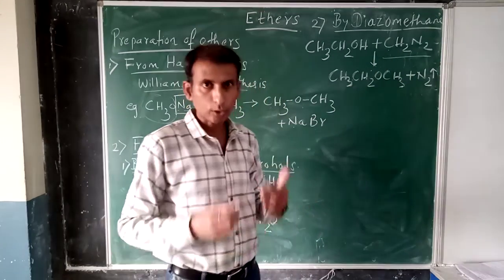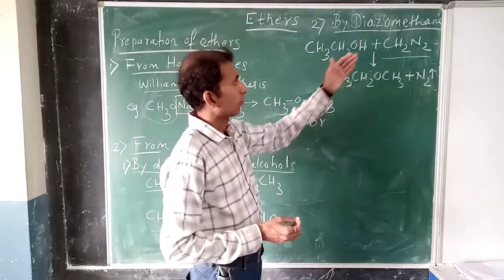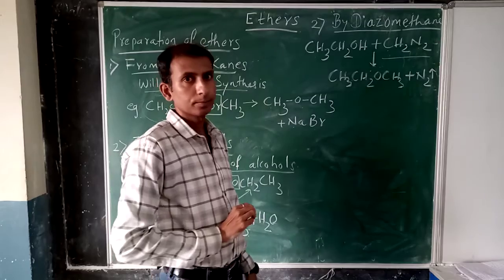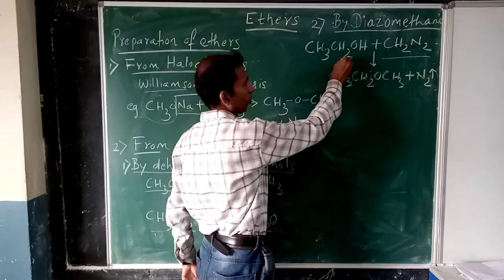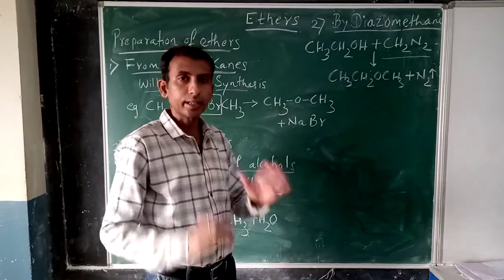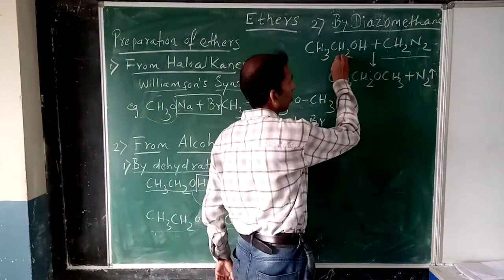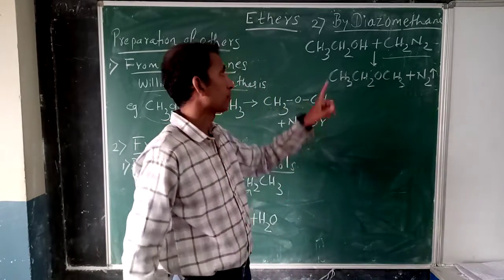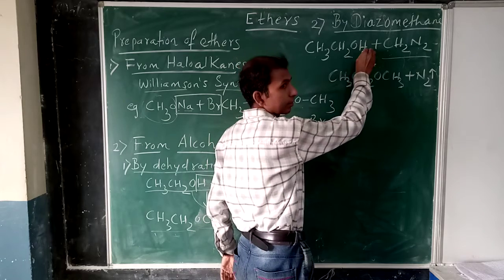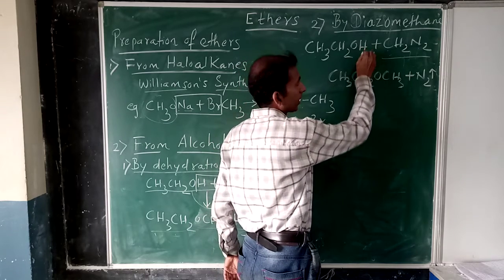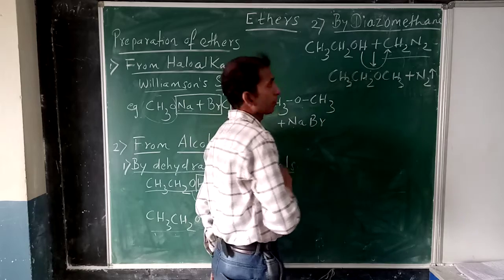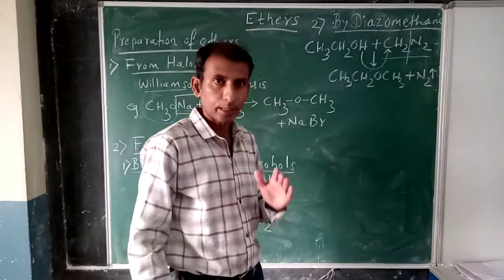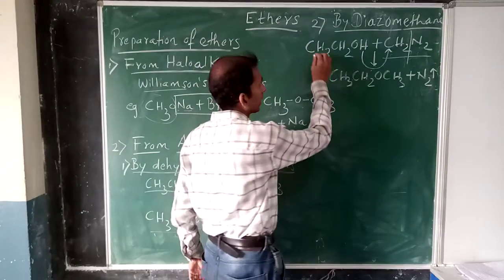Now let us see the preparation of ethers from diazomethane. You take one molecule of alcohol. What is the name? Ethanol. One molecule of alcohol is treated with diazomethane. What is happening here? Look properly. This H gets added to the CH2 group and N2 gets separated. So what you get here is CH3...